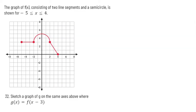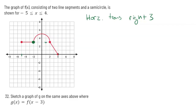Here we have a function f consisting of two line segments and a semicircle. The domain of this function goes from negative five to positive four. We want to sketch a graph of g on the same axis, where g is defined as f(x - 3). That's going to be a horizontal translation right three — that's it. So all my points are gonna go to the right three. This point moves here, that point moves to here, this point moves over to three, and this point moves over to seven. We also move the maximum of the semicircle over three. So we now have this new function — you can clearly see it simply moved right three.